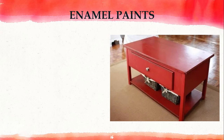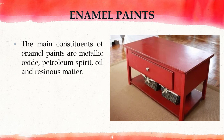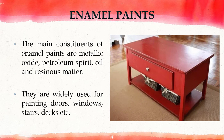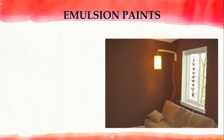Next are enamel paints. The main constituents of enamel paint are metallic oxide, petroleum spirit, oil, and resinous matter. Enamel paint dries very slowly, but after drying it forms a very hard, impervious, and smooth layer. This layer cannot be affected by acids, alkalis, gas fumes, or water. Different colored enamel paints are available in the market and are widely used for painting doors, windows, stairs, and decks.